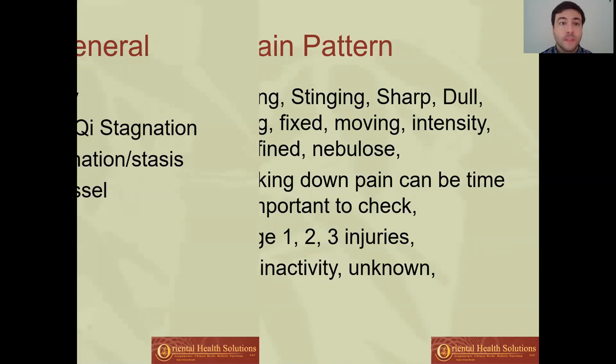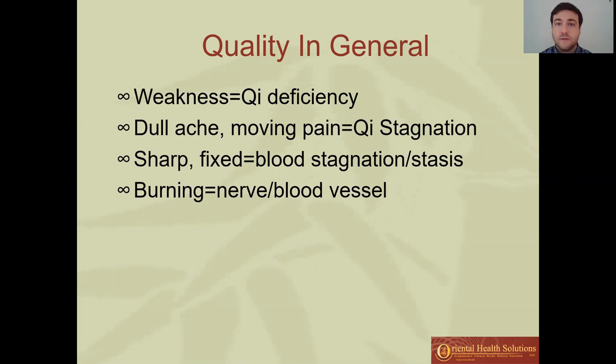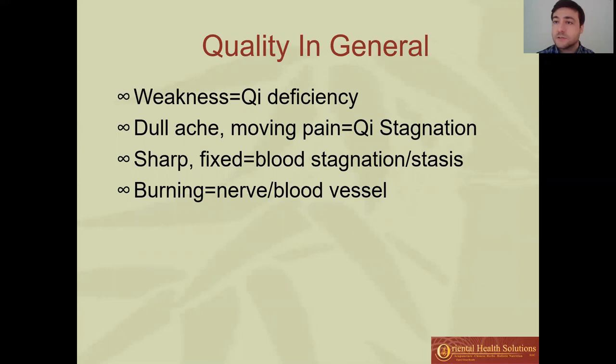In general, here's what some of those qualities mean. If there's a feeling of weakness, we often call it chi deficiency. An achy or wandering pain is a chi stagnation type pain. A sharp, fixed pain we call a blood stagnation type pain. A burning sensation or stinging is often nerve or blood vessel inflammation or impingement. None of these are always one hundred percent — they are a starting place to figure out what's going on.